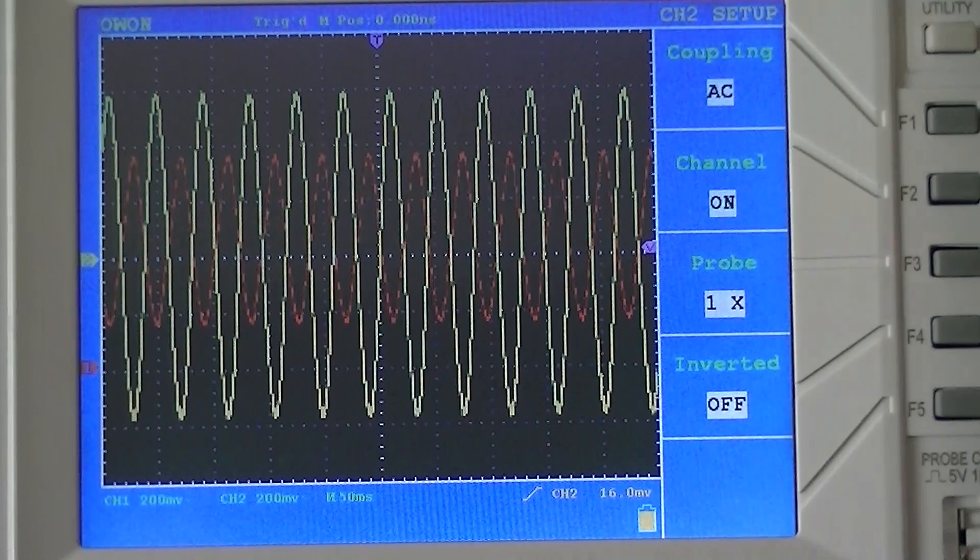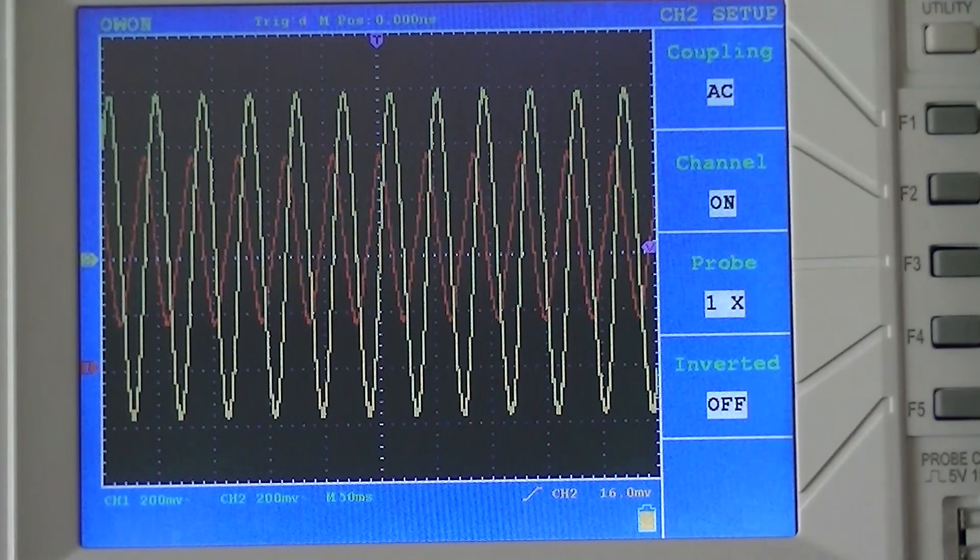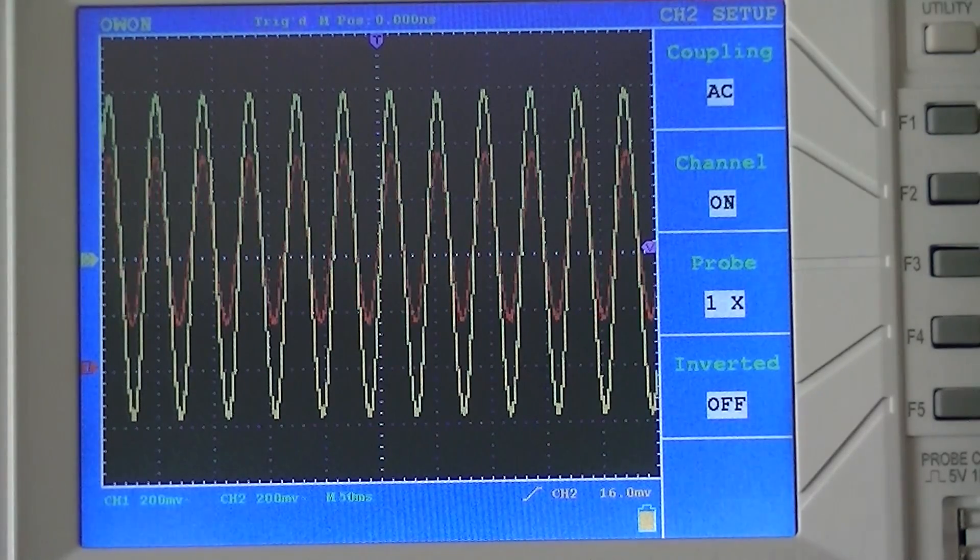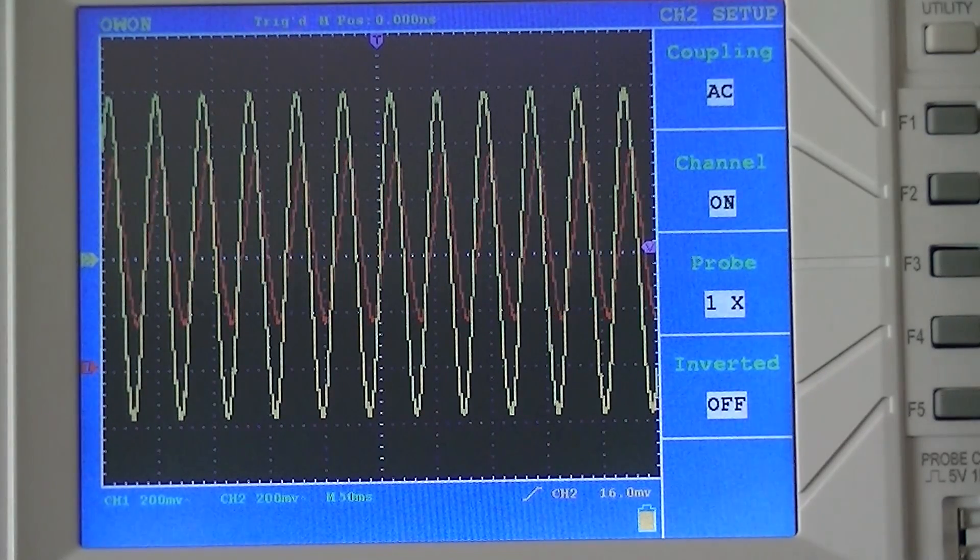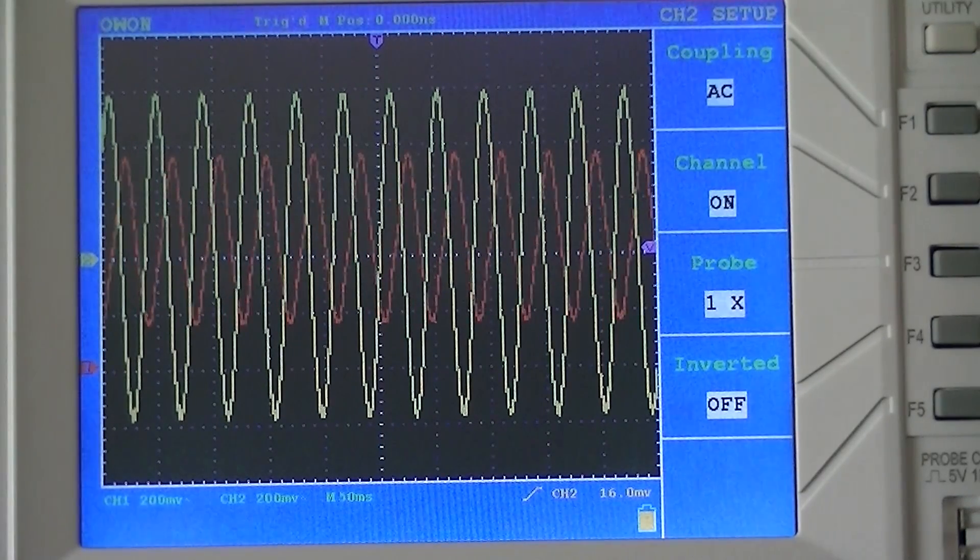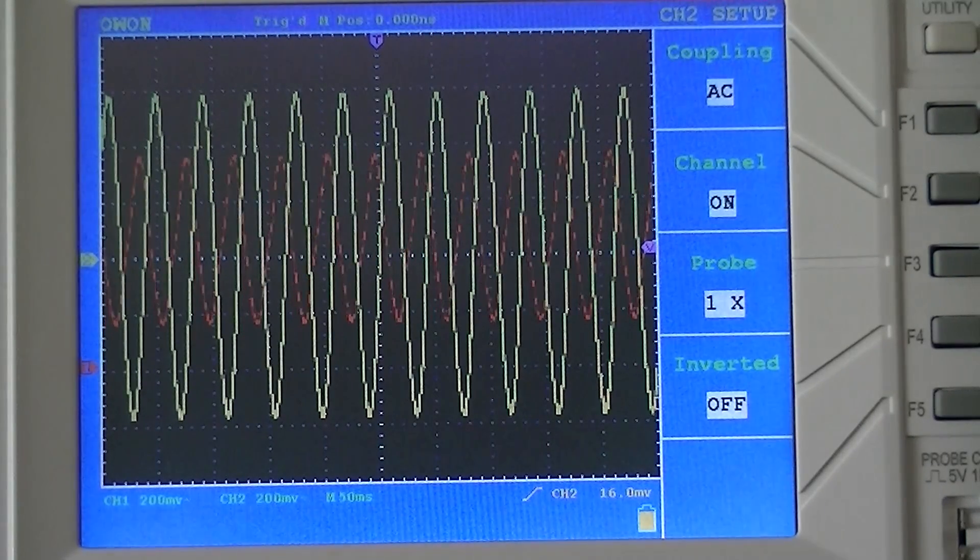it can have very different performances down at the 7.83 Hz range. The only way to really verify that your Schumann Resonance soundtrack is being produced correctly is to get an oscilloscope and hook it up to either the headphone output or your speaker output and see what's going on.